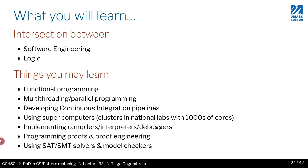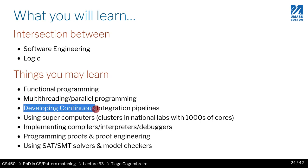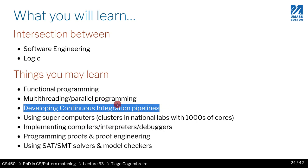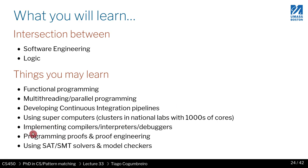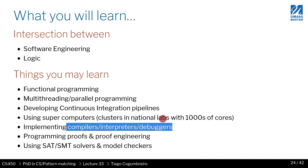We work a lot with functional programming — we study functional and parallel programming. We also do a lot of work supporting continuous integration pipelines; if you've heard of DevOps workflows, we work with that as well to maintain our software and make sure it's reliable. We do use supercomputers, but mostly for experiments — things can be done on your own computer. We also implement a lot of compilers, interpreters, and debuggers, depending on the kind of tool we're working on.